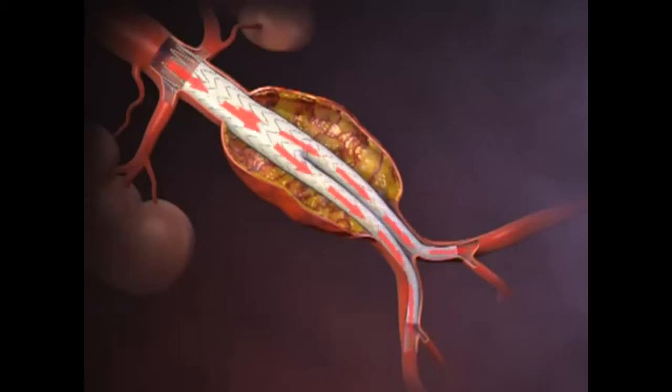Aortic blood subsequently flows through the stent graft. Endovascular abdominal aortic aneurysm repair is intended to relieve further pressure on the aneurysm and reduce the risk of further dilatation or rupture.